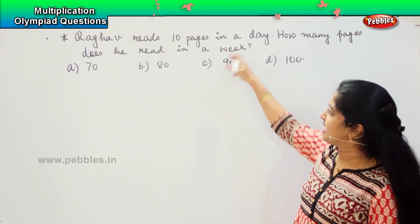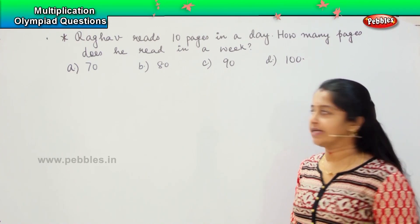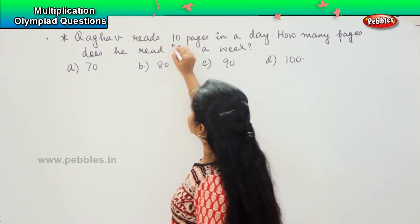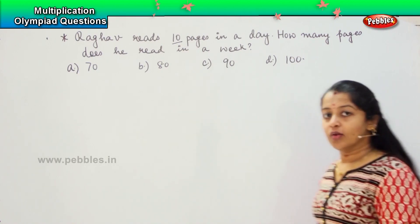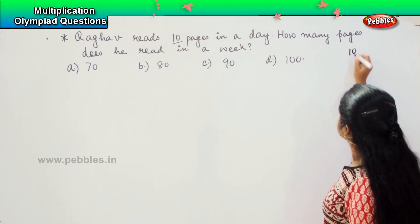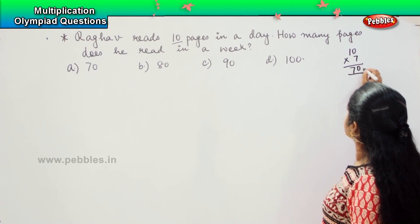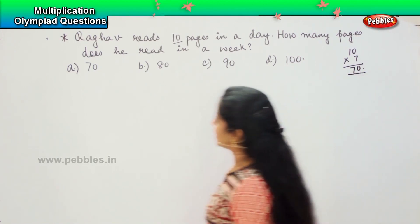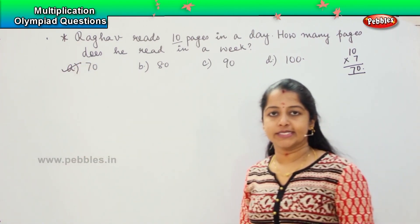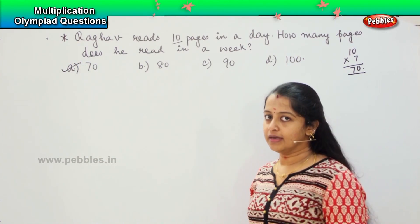So how many days are there in a week? 7 days, right? So Raghav is reading 10 pages in one day, which means that 10 into 7 equals 70, which means that option A is my right answer. Clear?